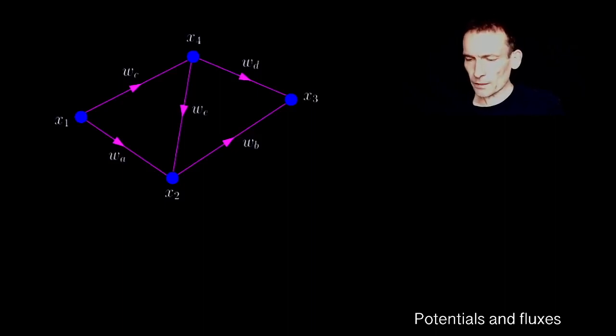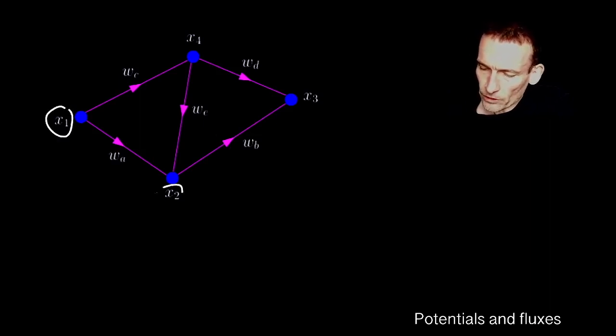Okay, welcome back. I've drawn on the board here the graph that we're familiar with, the four-node, five-edge graph, and you'll notice that instead of the labels, I've now assigned to each node a value x1, x2, x3, x4. I'm going to call those node potentials.